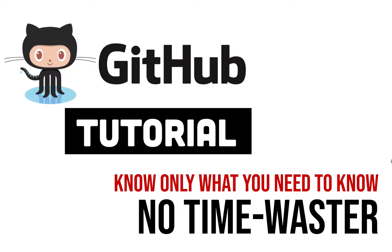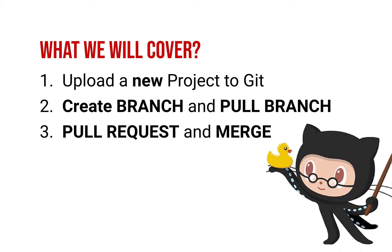So let's see what we'll cover. First, uploading a new project to Git. Second, creating a branch when you need to add a feature or when multiple people are working on it, and also pulling data from branches. Third, pull requests — whenever you're done with a branch you send it to the person who has the power to merge it into the master branch.